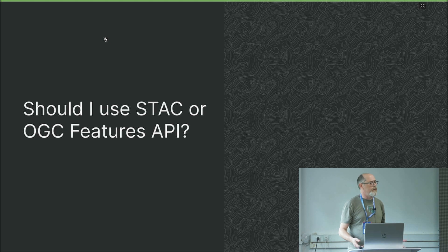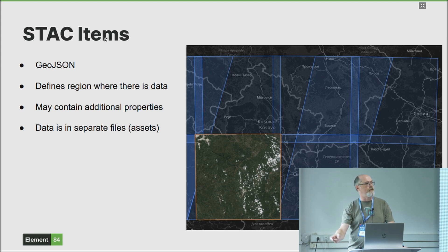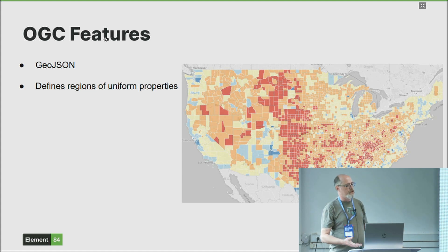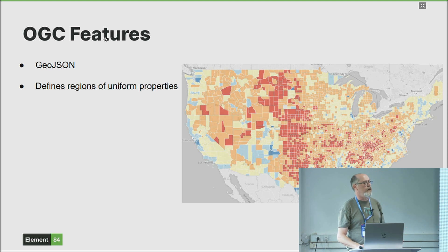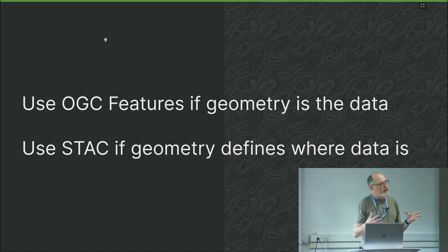I get this question a lot: should I use STAC or should I use a Features API for my data? STAC items are GeoJSON — they define the region where there's data, and that region can contain additional properties in the STAC metadata, but the actual data is in separate files called assets. In the illustration you can see footprints of different scenes. With OGC Features, it's also GeoJSON describing regions of uniform properties, but there are no separate assets. The question to ask yourself is: if your geometry is the data itself, use OGC Features; if your geometry is really just metadata about where the data is located, use STAC.